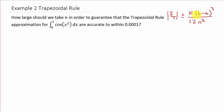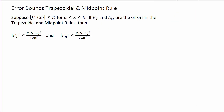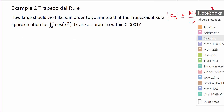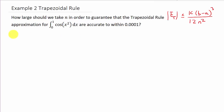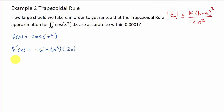Sometimes finding k is easy and sometimes it's more difficult. To get k, we need the second derivative, because remember the absolute value of the second derivative is less than or equal to k. So I have f of x equal to cosine x squared, and I need the derivative of this.